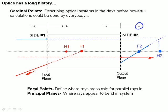point F1 is inside the optical system. And principal plane H1 is also inside the optical system. And it is, in fact, a positive number in this case.